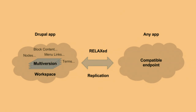So how do these modules fit together? Starting in the middle on the left, multiversion is really the storage level, enabling a stack of revisions for all content entities — nodes, block content, manual links, terms, etc. All content is contained in workspaces. The replication module is responsible for lifting and shifting. Relaxed is the specification of the API we talk over HTTP. And we can talk to any compatible endpoint — another workspace, a CouchDB database, or other applications that Mikkel will touch on later.